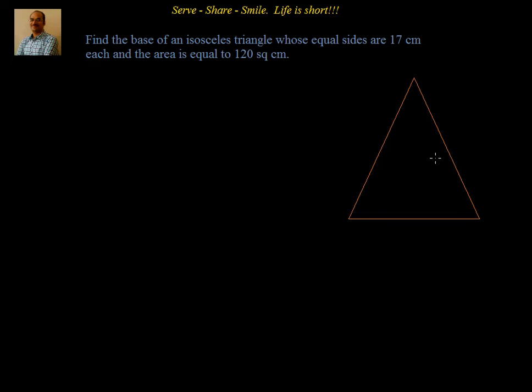Hello friends, welcome back. Hearty welcome to you. Let's look at one more interesting example related to quadratic equations for the 10th grade syllabus. Let's go through the problem: find the base of an isosceles triangle whose equal sides are 17 centimeter each and the area is equal to 120 square centimeter.